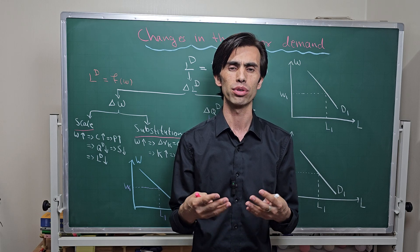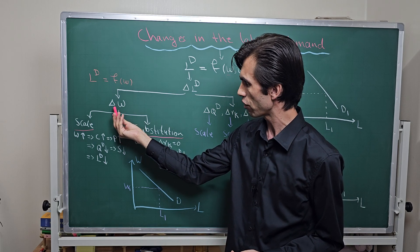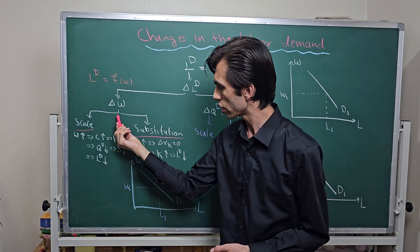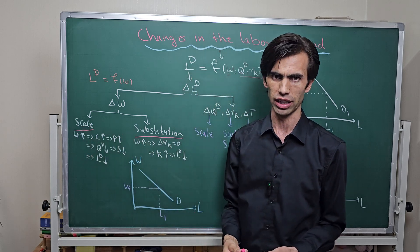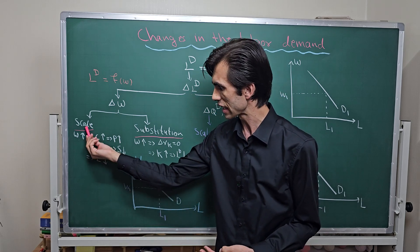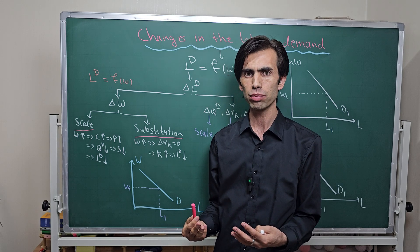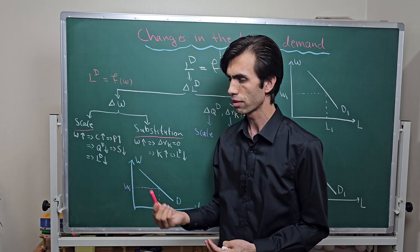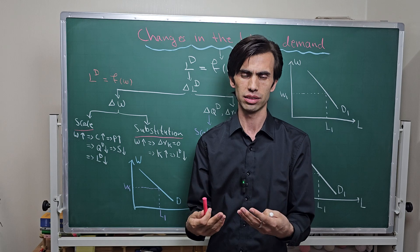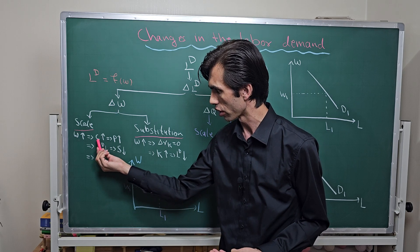Let's look at an example. When the wage level changes, the change in wage level will change the demand for labor due to two different effects: scale effect and substitution effect. For example, let's say the wage level increases. In the case of a scale effect, the cost of producing output will increase, which leads to an increase in price. When the price increases, customers will respond with a decrease in demand for the final output.